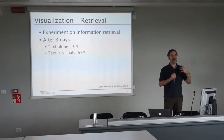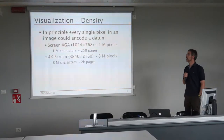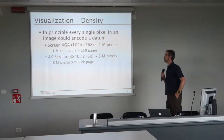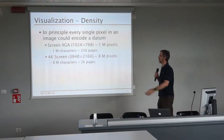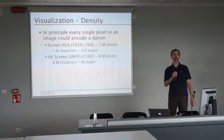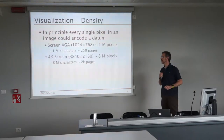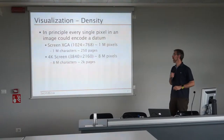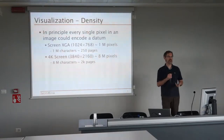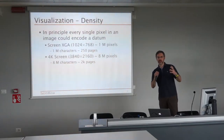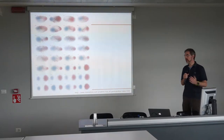That is a strong argument in favor of using visualization rather than basic text. The second argument is density. In theory, every single pixel of an image could encode a single data point — a number. If you take an SVGA or 4K screen, we have from 1 to 8 megapixels. Even encoding just one character per pixel means we can encode the equivalent of 2,000 pages of written text. The amount of information we can show is much higher using visual representation than textual representation.